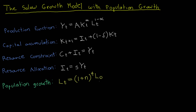As long as you know what the labor supply is at the beginning of time — which in this model is period zero — then you can easily recover the labor supply in any period T in the future. Aside from that, the model is identical. We have the capital accumulation equation, which states that capital in period T+1 is equal to investment from the previous period plus the amount of capital that does not depreciate, where delta is the depreciation rate. We also have the resource constraint, so consumption plus investment equals production, and the resource allocation equation, where investment is a constant fraction S of GDP, with S being the savings rate taking values between zero and one.